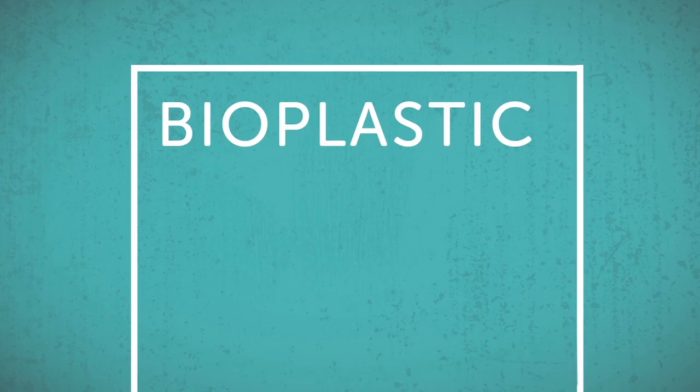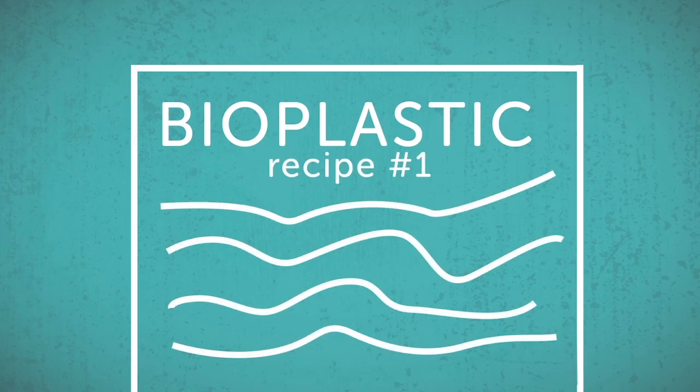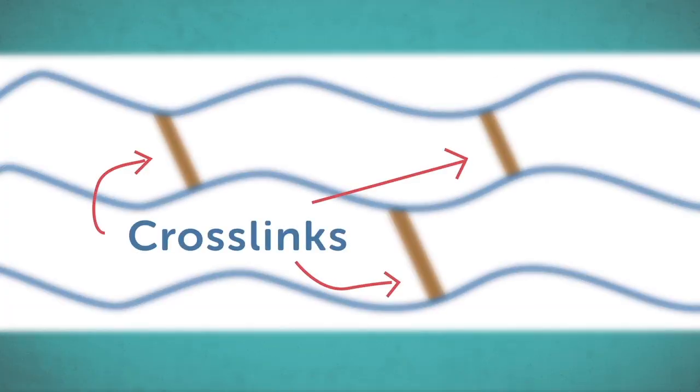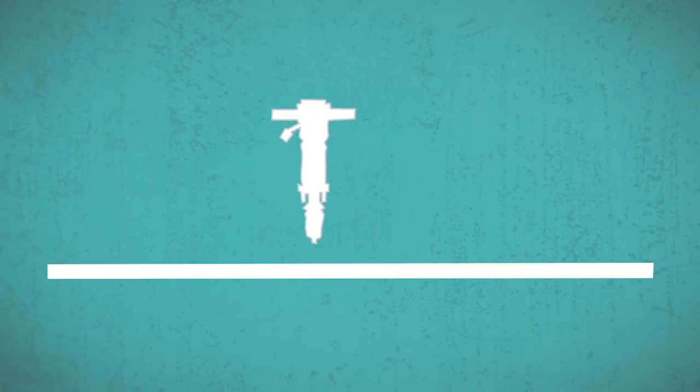In order to make bioplastics with lots of different properties, Mike and his team engineer lots of different recipes. Say you need a plastic that's rubbery. Mike adds bonds called crosslinks to the bioplastic. The crosslinks hold the polymer chains together so they can't slip by each other.